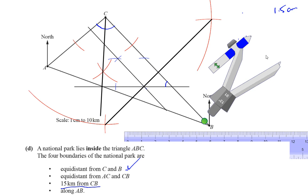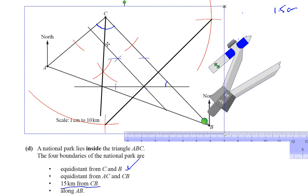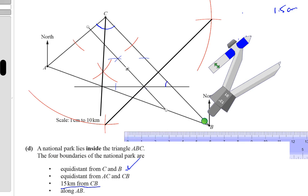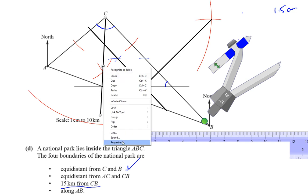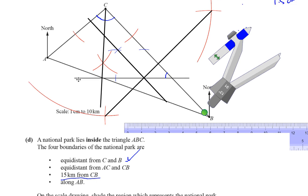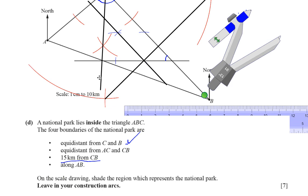I'll make the actual boundary lines a bit thicker so they're distinct from construction lines. So we have: the line 15 kilometers from CB, the perpendicular bisector which is equidistant from C and B, and the angle bisector which is equidistant from AC and CB. The fourth boundary is along line AB.